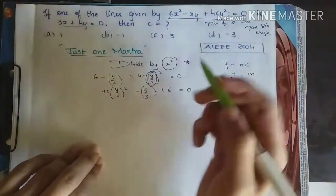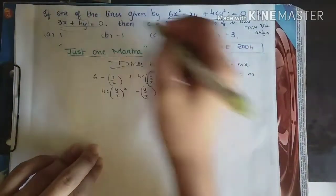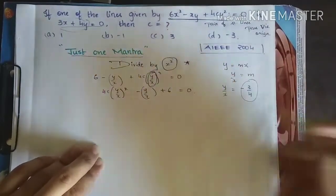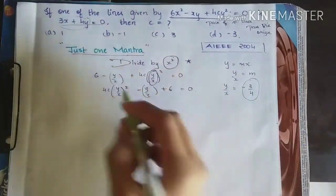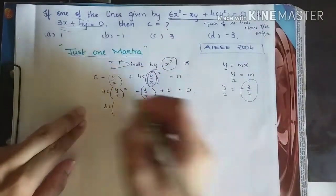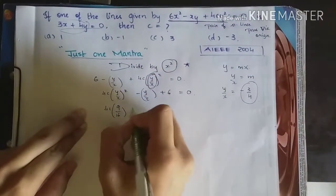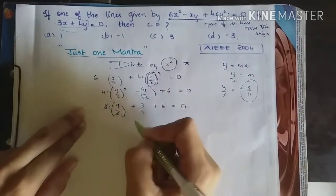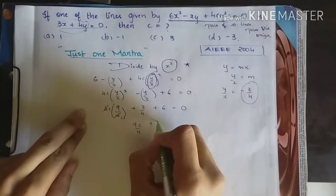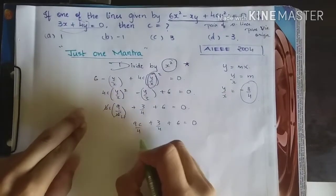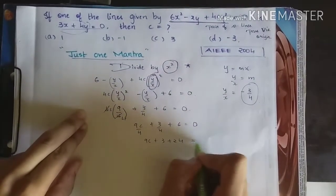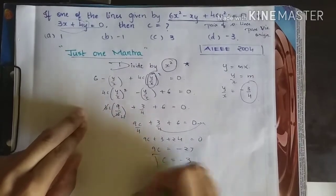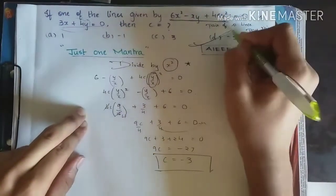Now we need the value of c. And we know one of the slopes is this. In that, we will get y by x is equal to minus 3 by 4. So one of the slopes is minus 3 by 4 out of this equation. So let us substitute minus 3 by 4 over here. 4c into 3 by 4 that is whole square that is 9 by 16 minus of minus will become plus 3 by 4 plus 6 equal to 0. So 4 forza that is 9c by 4 plus 3 by 4 plus 6 equal to 0. Let us take LCM. 9c plus 3 plus 24 equal to 0 if I send the 4 also the other side. So 9c equals to minus 27 and c is equal to minus 3. This is so simple. Minus 3 will be our answer.